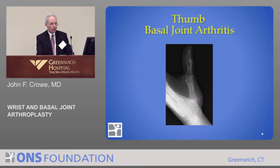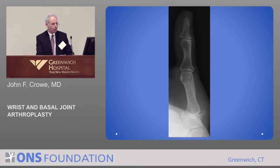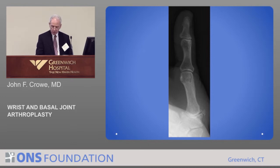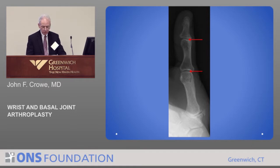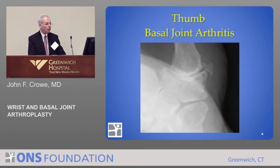So I'm going to specifically talk about basal joint arthritis, which is the most common thing we operate on and the most common arthroplasty in the hand. Here's the thumb — there are three joints. The distal joint and the metacarpophalangeal joint in this thumb are normal. The basal joint is abnormal — it's narrowed, it's got a little spur developing, and it's got a dislodged fragment.